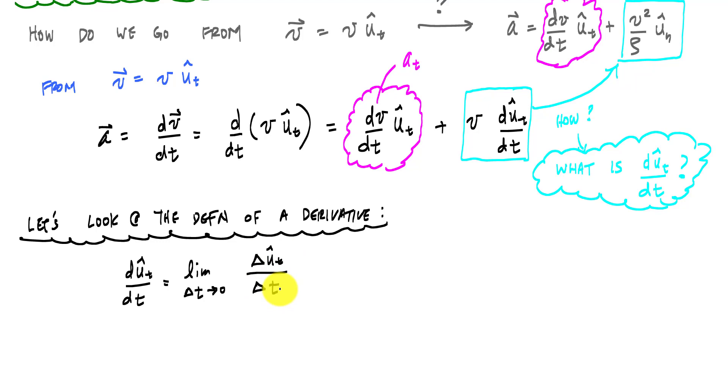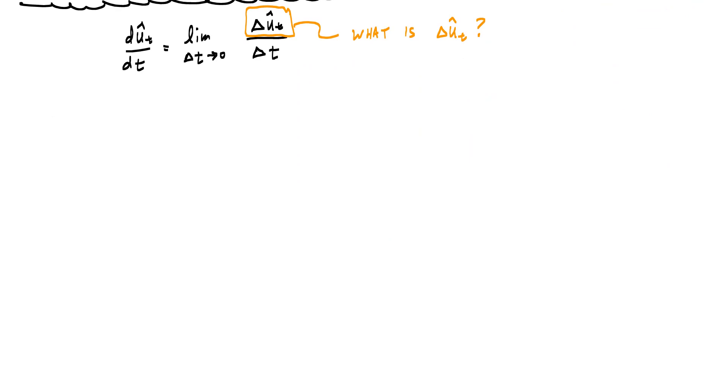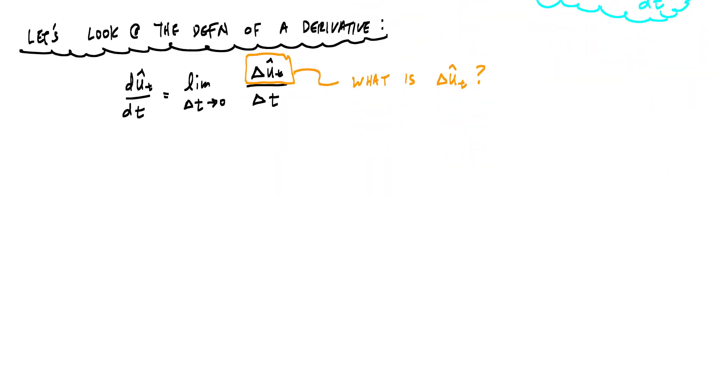So now we have even a more focused question. What is delta u_t hat? And to answer that, let's consider a particle - we need a drawing here. So here I've got the same curve path as I had before. Let's say that the particle starts here at time t and then moves here to t prime and it's on the same arc length. And we'll call this arc length delta s like this.